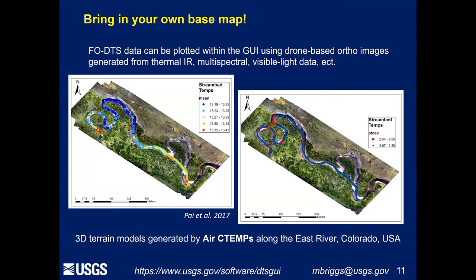You can also bring in your own base map — it doesn't have to be one of these Google Maps stock images. In this case this is data generated by air sea temps along the East River in Colorado, part of a QWASI training course in 2016. This is a meander bend. You can see mean temperature on your left; we've got some cooler areas in the meander bend. Standard deviation is lower there — we interpret that as a kind of cross-meander bend hyporheic exchange. This is basically a 3D model generated from drone imagery that we're able to plot this data right on in space quickly, all within the GUI.